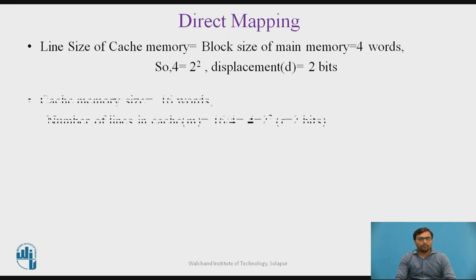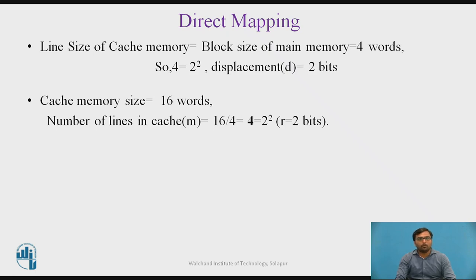Before discussing the technique, we are assuming that the line size of cache memory is equal to the block size of main memory. We consider that the block size is four words, and one word size is one byte. Since there are four words, and four equals two squared, we use two bits to identify that particular word in the block. The last two least significant bits are used to identify that particular word in that block.